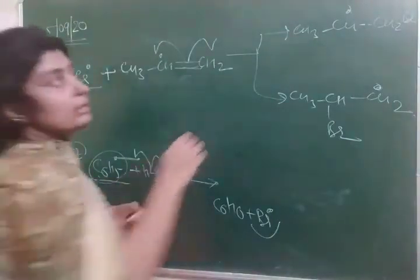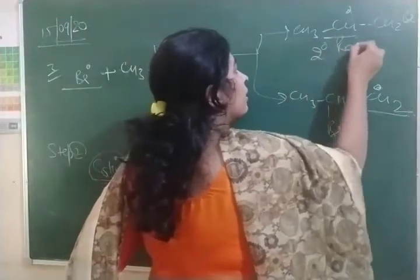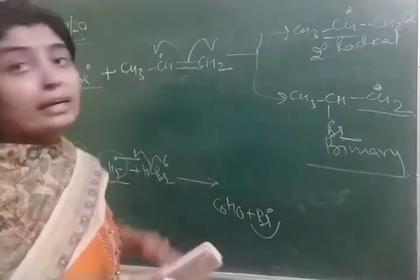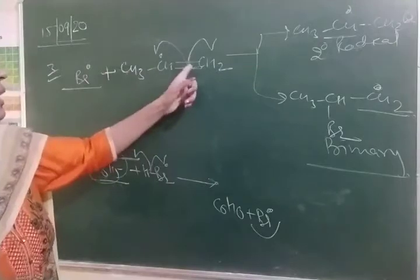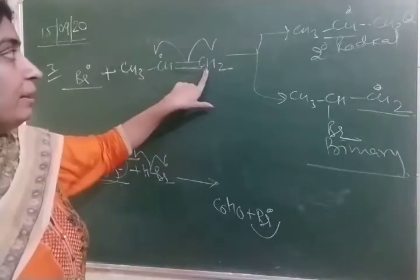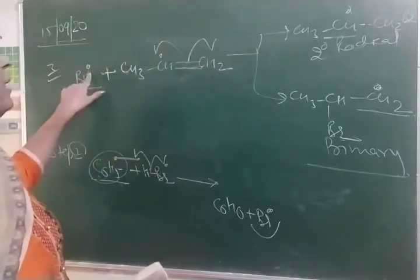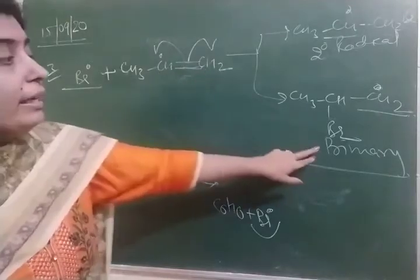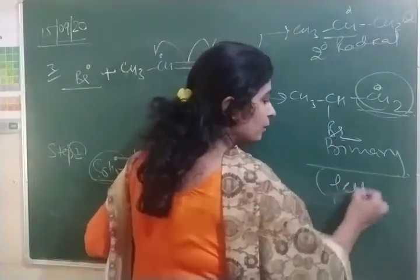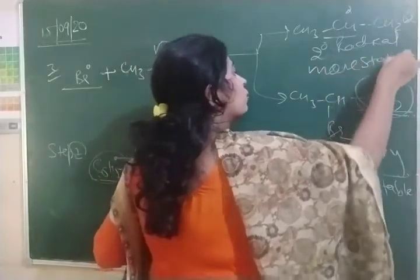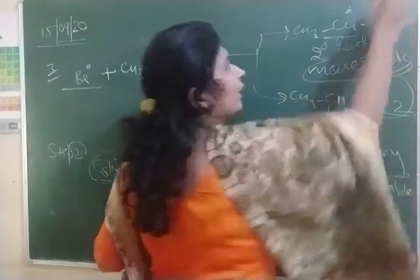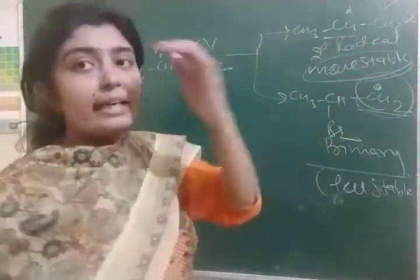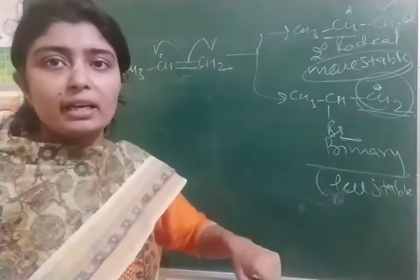But which radical is more stable? This is a secondary radical, and this is a primary radical. The secondary radical is more stable. So after the attack of the Br radical on propene, there are two possibilities for radical formation by homolytic cleavage. If Br joins at the first carbon, the radical remains on the second carbon — that is secondary radical. If Br joins at the second carbon, the radical remains on the first carbon — that is primary radical, which is less stable. So ultimately our Br goes to the first carbon, because the secondary radical formed at the second carbon is most stable.